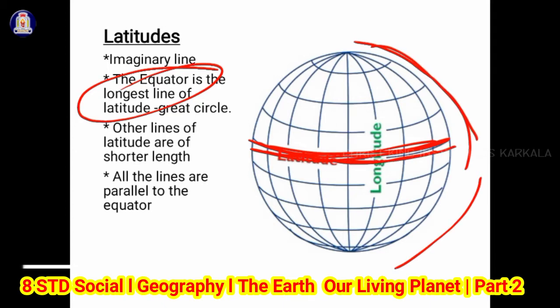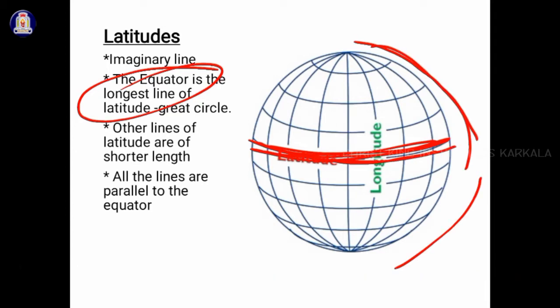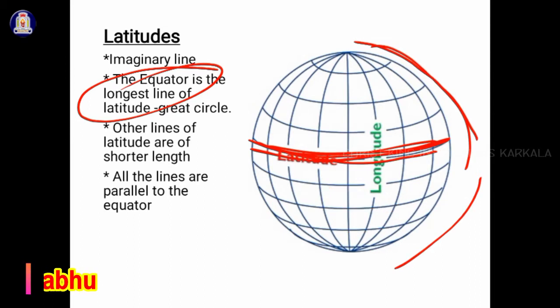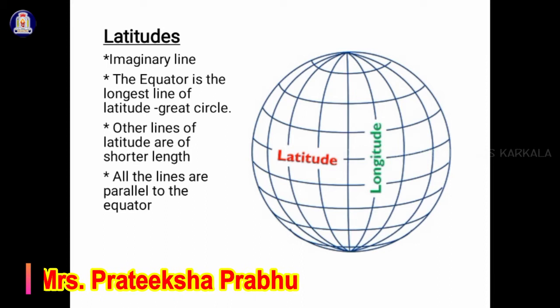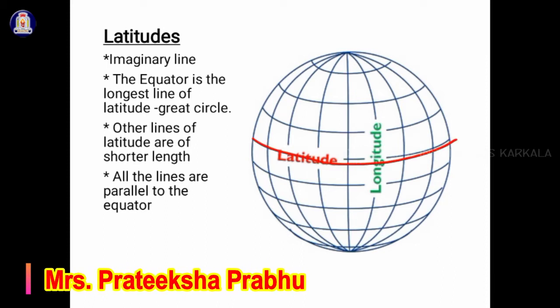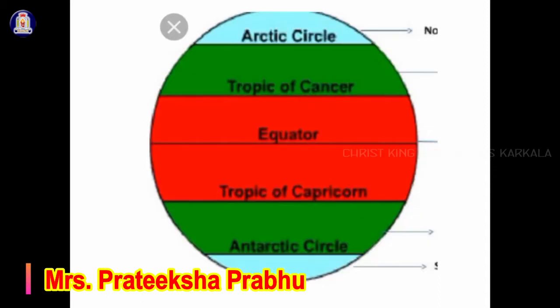Other lines of latitude are of shorter length, and all the lines are parallel to the equator. These lines never meet the equator because they are parallel to it. Now let's learn about some important latitudes. The equator is zero degree latitude, which is also called the great circle.